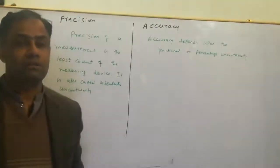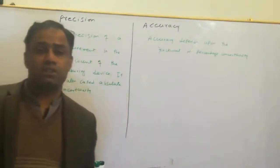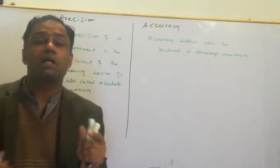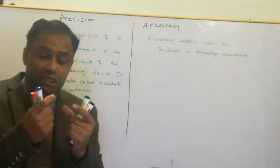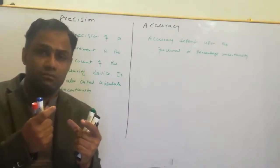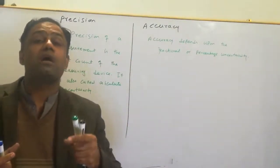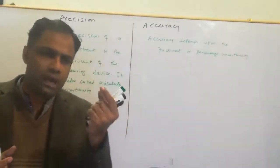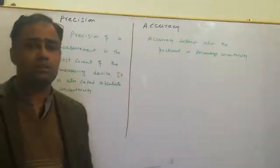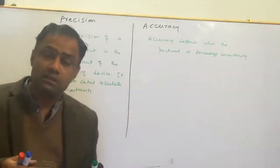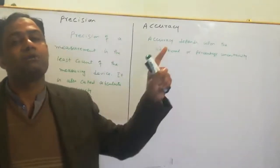The next very important short question is the difference between Precision and Accuracy. Precision means how close the measured values are to each other. Accuracy means how close the measured values are to the actual value or true value. How close the measured values are to each other is Precision, and how close the measured values are to the actual value is what we call Accuracy.